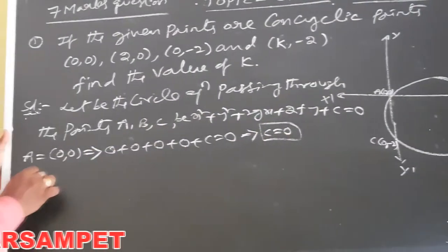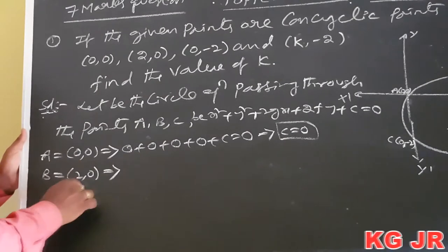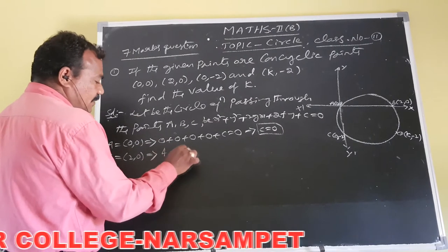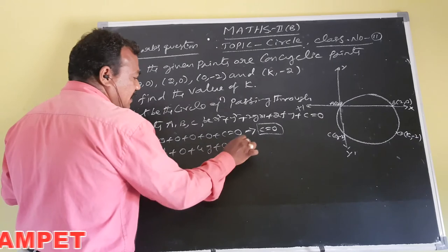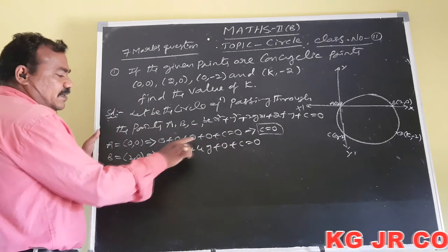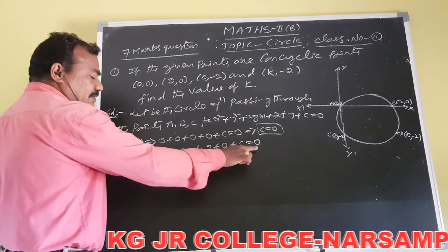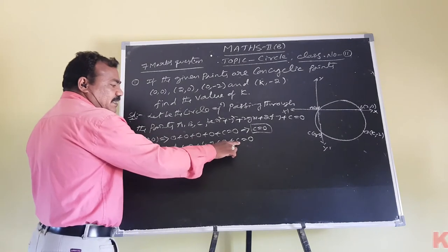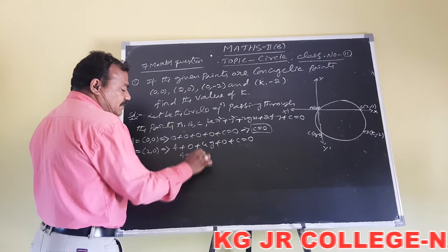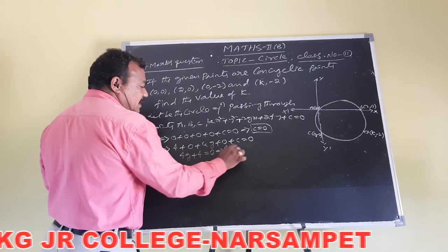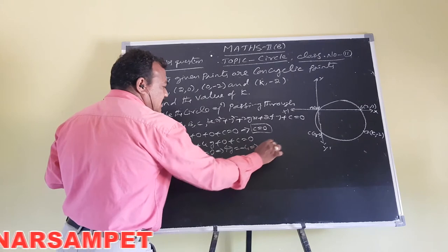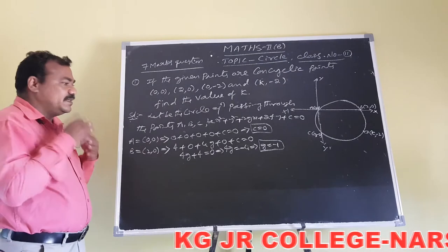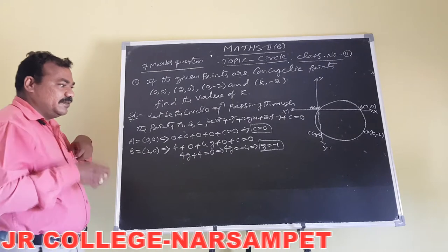Similarly, putting point B=(2,0): x=2, y=0. We get 4 + 0 + 4g + 0 + c = 0. Since c=0, this becomes 4g + 4 = 0, so 4g = -4, giving g = -1.